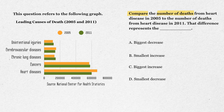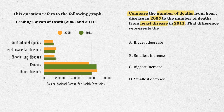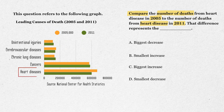We're asked to compare the number of deaths from heart disease in 2005 to 2011. Let's check out the graph. The orange bars are 2005 and the green bars are 2011. Look at heart disease at the bottom. The orange bar in 2005 is longer, around 650,000 deaths.